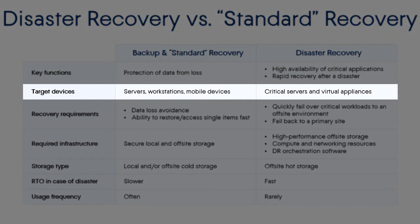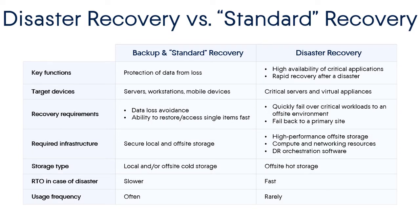The targets for standard recovery are servers, workstations, and mobile devices, whereas disaster recovery is aimed at business-critical applications and servers. To summarize, disaster recovery shouldn't be treated as yet another recovery mode that is more sophisticated and expensive compared to standard recovery, and is only targeted at a privileged network of elite clients. Moreover, it shouldn't be seen as a substitute for standard recovery. Both recovery types can be beneficially used within one company. For instance, standard recovery can be used for file-level recovery of Windows machines, whereas disaster recovery can be used to restore servers and business-critical applications such as e-commerce websites or Acronis Active Directory.